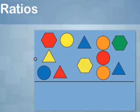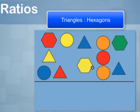The ratio of triangles to hexagons is four to three, or four-thirds, or four to three.